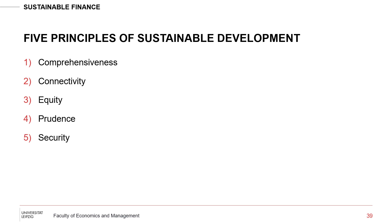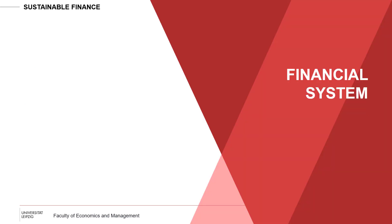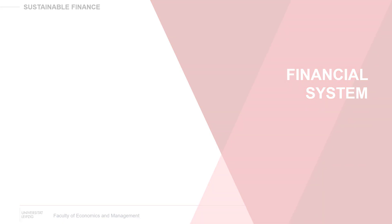The five principles of sustainable development are: comprehensiveness, connectivity, equity, prudence, and security. This has been a short introduction to the Sustainable Development Goals, which form the framework we will use throughout this lecture. We've already encountered ESG as a very important principle in sustainable finance, and in the next video we'll start talking about the financial system.